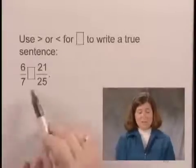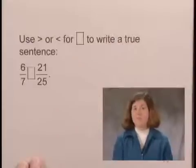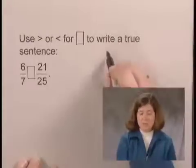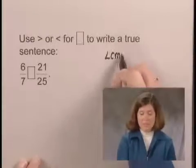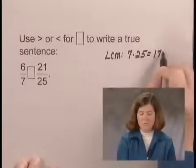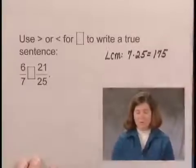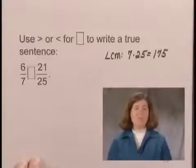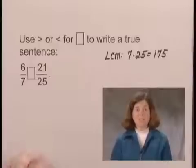Looking at the denominators 7 and 25, they have no factors in common, so the least common multiple is their product, 7 times 25, or 175. So I need to write 6/7 and 21/25 with a denominator of 175.